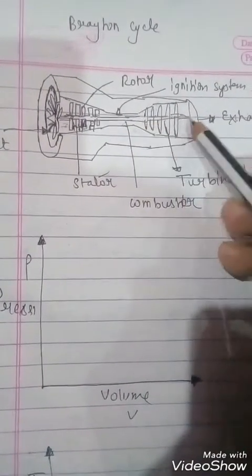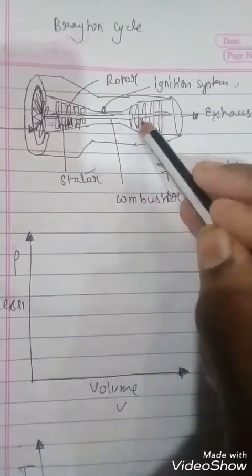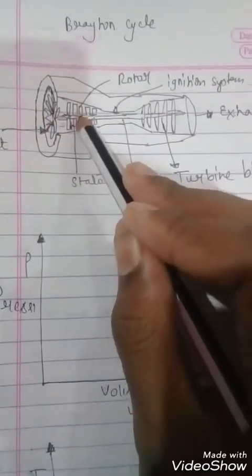This is a turbine blade. This blade is connected with the same shaft of the compressor blades.